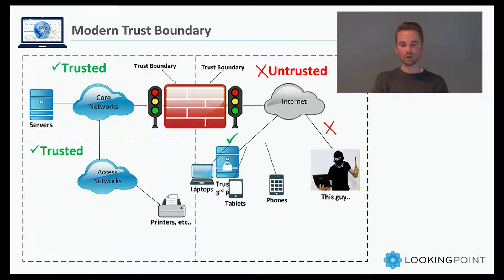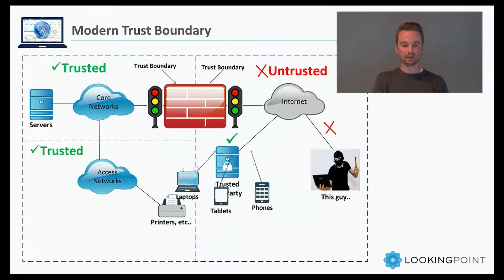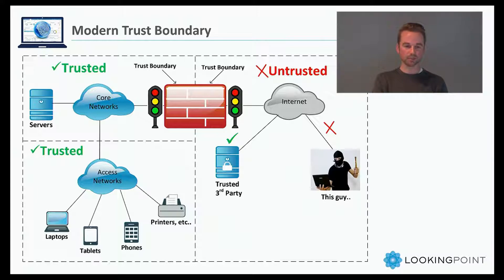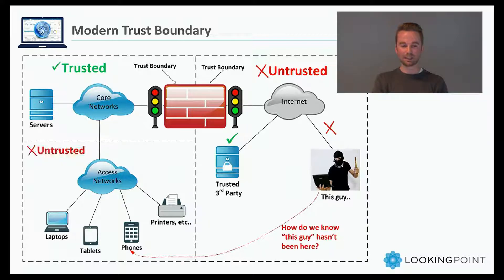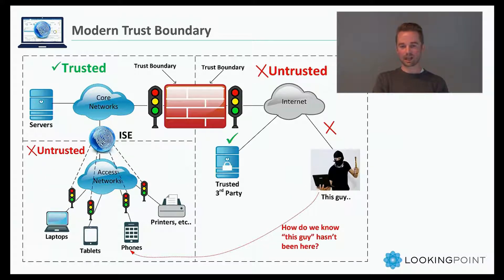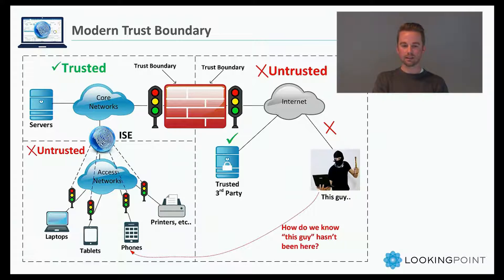Those devices are now moving between the untrusted internet and back into the office to the trusted access network. This presents a problem, as we don't know whether or not this guy has been there. So we can no longer trust those devices connected to the access networks by default — those devices have to earn their trust. They earn their trust by authenticating to ICE, where we centrally define our network access control policies. Cisco ICE integrates very tightly with those network access devices — your closet switches, your wireless access points — in order to enforce that network access control policy on a per-user and per-device basis. So we can now see why Cisco ICE adds value to the security posture of our network and the use case for where we would want to employ it.